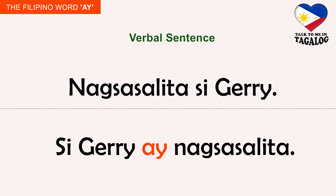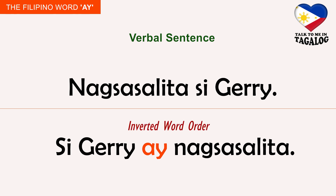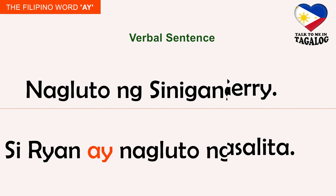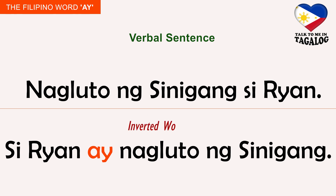Our next sentence type is called a verbal sentence because it contains a verb in the predicate position. 'Nagsasalita si Jerry' means Jerry is speaking. Inverted order: 'Si Jerry ay nagsasalita'. 'Nagluto ng sinigang si Ryan' means Ryan cooked sinigang. Inverted order: 'Si Ryan ay nagluto ng sinigang'.